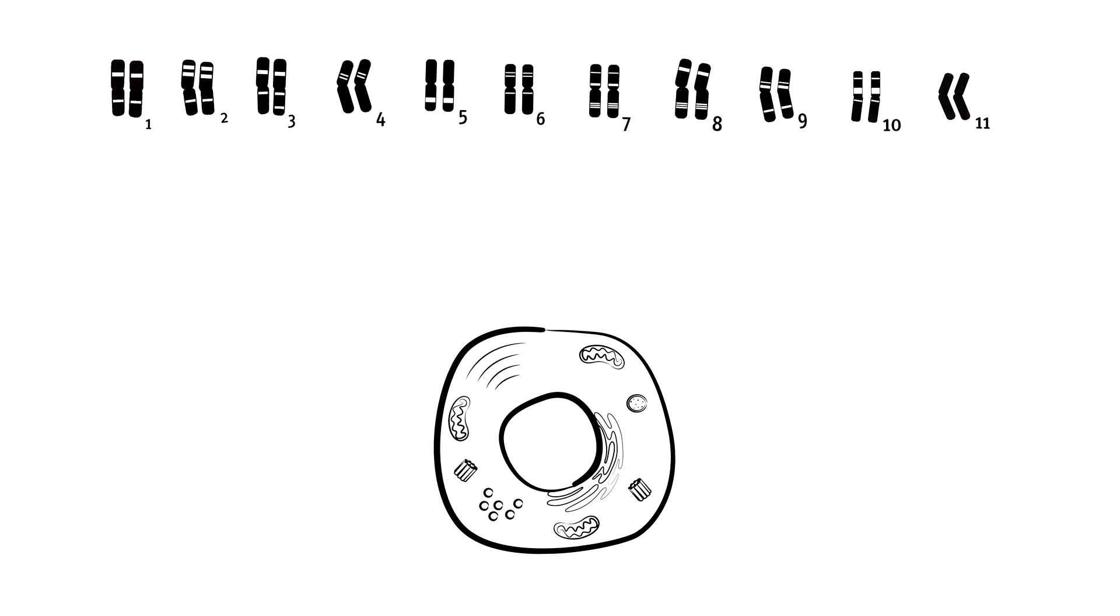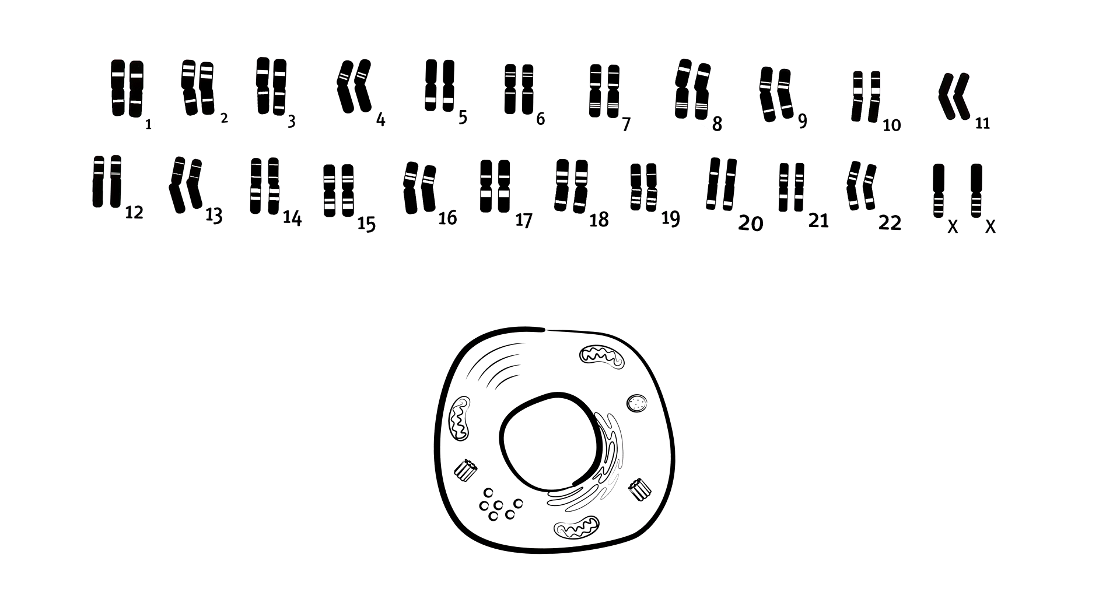In the nucleus, DNA is packed tightly into 23 pairs of chromosomes. The first 22 pairs are always doubled.